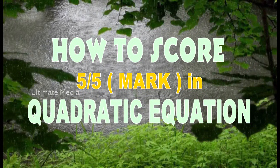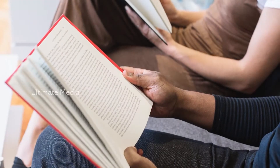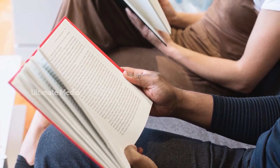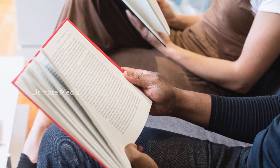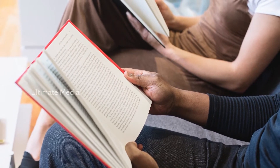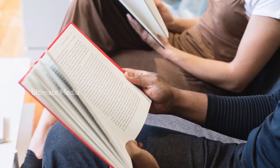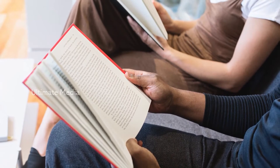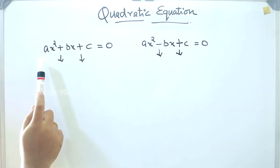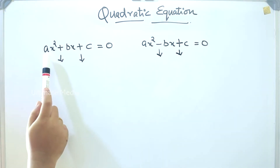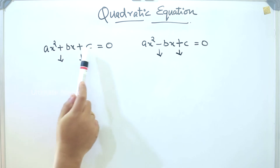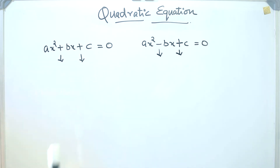Hi friends, welcome back. The topic is quadratic equations — five questions appear in prelims exams and main exams, five marks. That is a quadratic equation sure question. When we study the product and sum, we have to use a method — we have to use a quadratic equation: ax² + bx + c = 0.